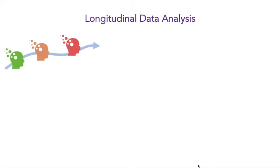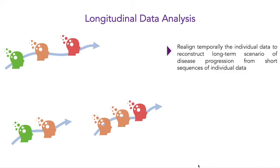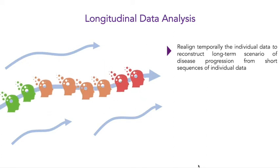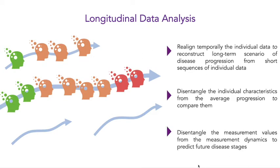To build such a model, we'll rely on longitudinal data analysis. We'll have longitudinal data of numerous patients — here's an example of a patient that came three times during their visits, then a second and third individual. The challenge is to realign the temporal dynamics of the individual data to reconstruct the long-term scenario of disease progression from the short sequences of individual data. Based on that, we'd like to disentangle individual characteristics from the average progression, and also disentangle measurement values from measurement dynamics to predict future disease stages.